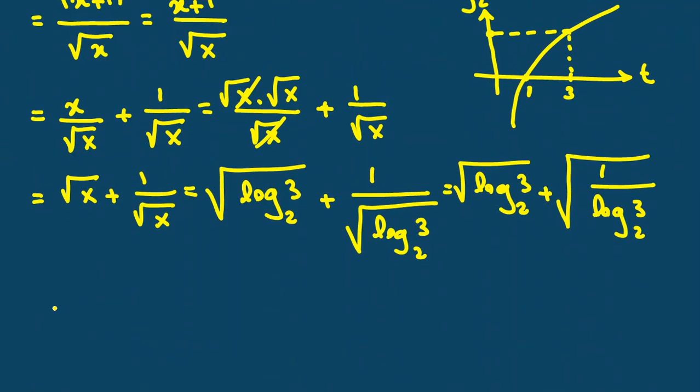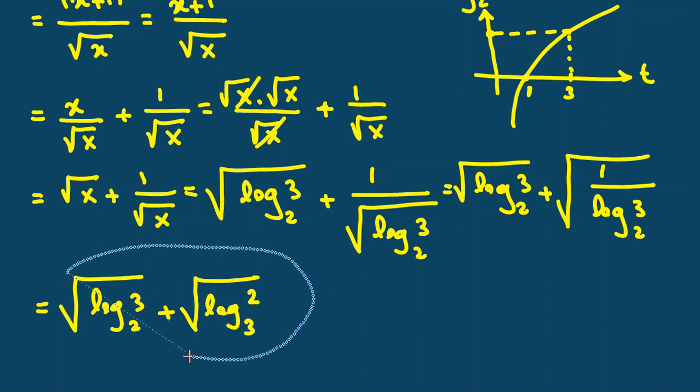So, the first term is square root of log base 2 of 3. And the second term is square root of what? You should switch 3 and 2. It will be log base 3 of 2. So, the answer of this problem is this.